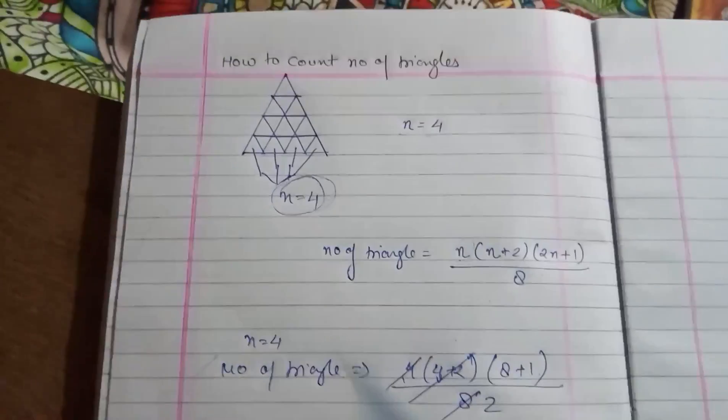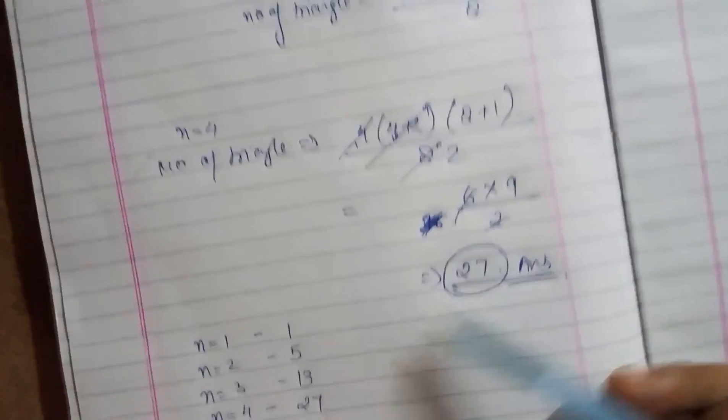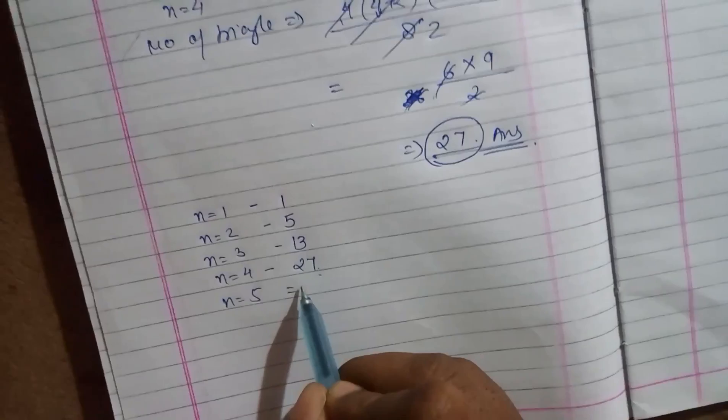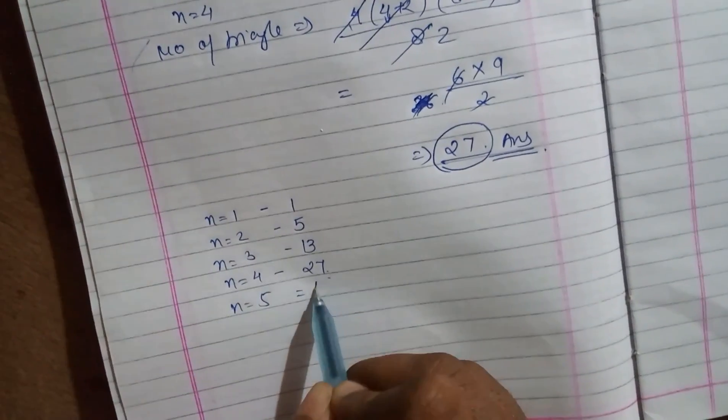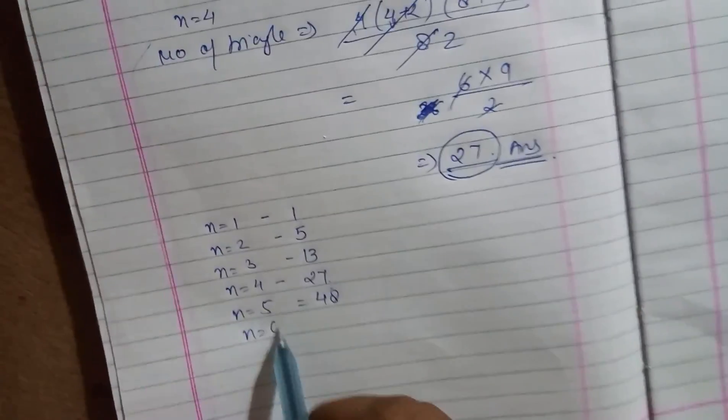Our result: n equals to 5, that was 48. N equals to 6, 78. Let's face it.